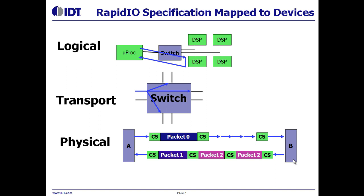At either end of a link are two link partners, or processing elements. These link partners exchange two kinds of information: packets and control symbols. The use of control symbols allows RapidIO to guarantee the in-order delivery of packets from an endpoint to their ultimate destination. The transfer of packets is governed by two quantities: the priority of the packet, and the acknowledge ID found in the packet and also carried in control symbols.